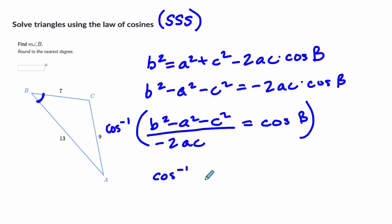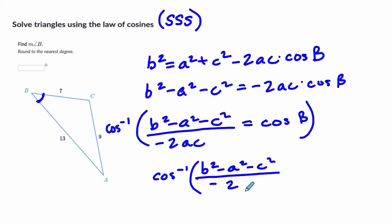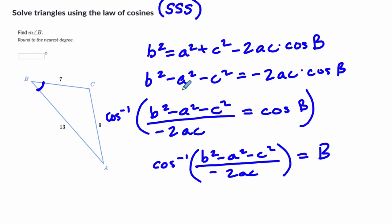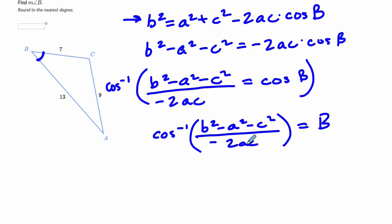So angle B equals the inverse cosine of B squared minus A squared minus C squared, all over negative 2AC. All I did was condense those algebraic steps into one formula. You subtract A squared and C squared, divide by negative 2AC to get cosine of B, then take the inverse cosine of that result to get the angle.